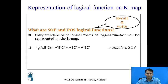For example, the function f1(a, b, c) = Ā·B̄·C̄ + A·B·C̄ + Ā·B·C̄ is a standard SOP. A standard SOP is a sum of products where in all the terms, all the variables are present. If any variable is missing from a term, then it is not a standard or canonical form.